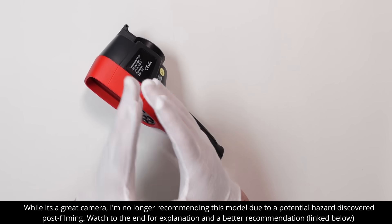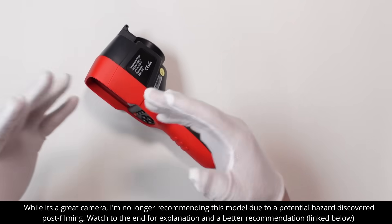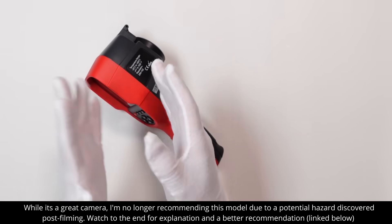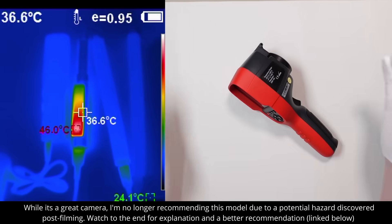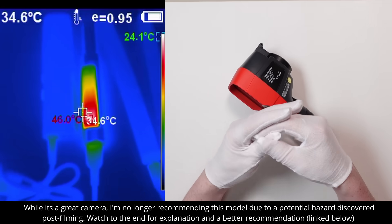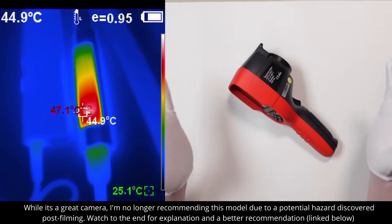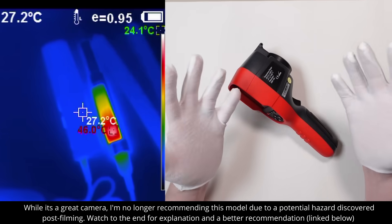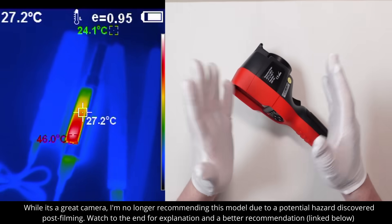One thing to remember though, is that the colors are all relative. So if something's glowing hot in the image, it's not necessarily super hot, it's just hotter than everything else around it. For example, I was reviewing a bunch of electric screwdrivers a few days ago, and I noticed that one of them was getting very hot compared to the others. Now it's only 45 degrees Celsius or 115 Fahrenheit, so it's not super hot, but noticeably hotter than any of the other three.